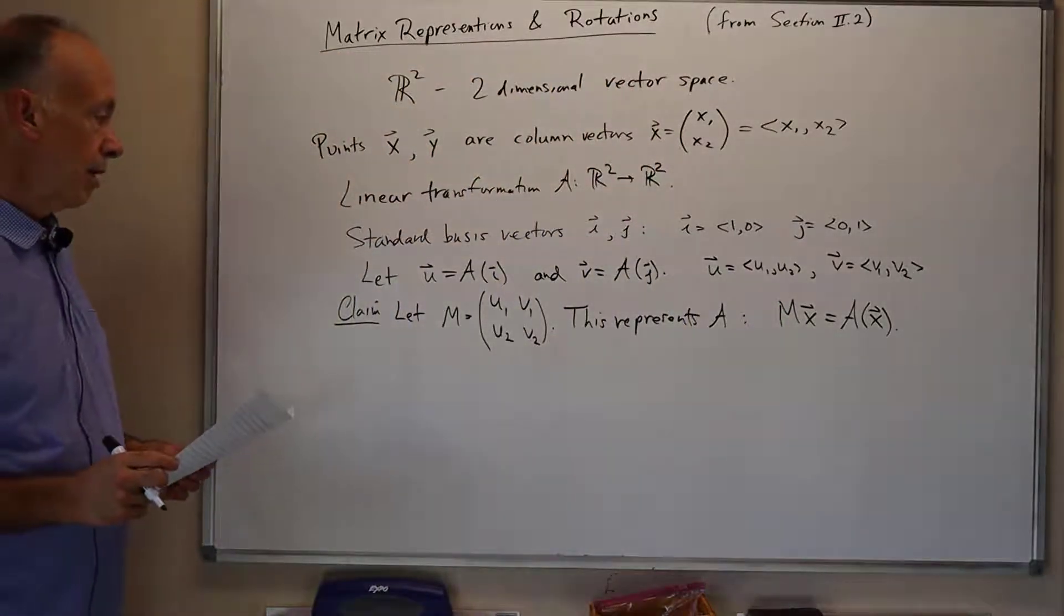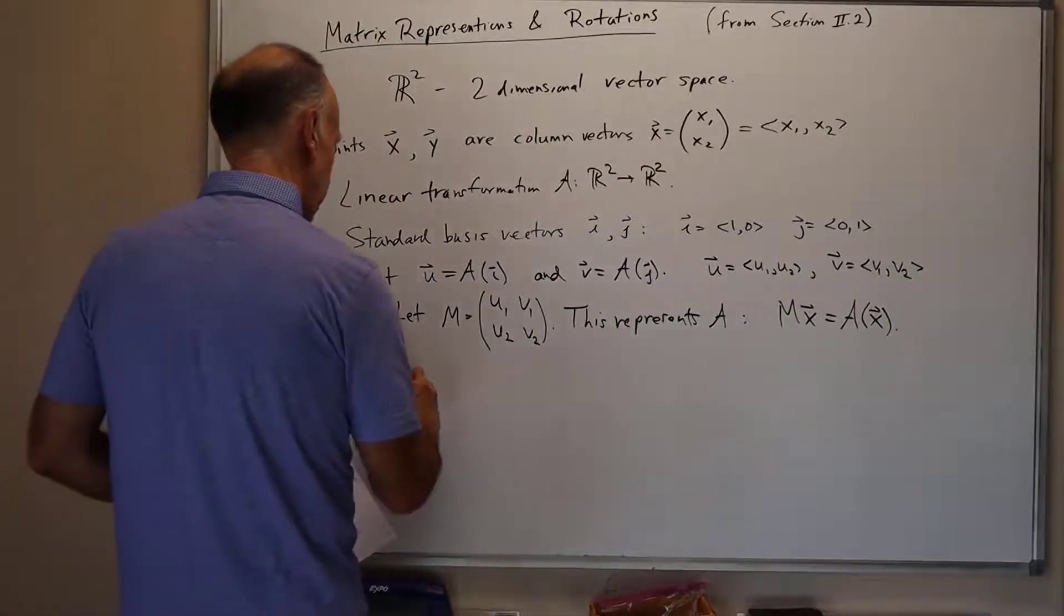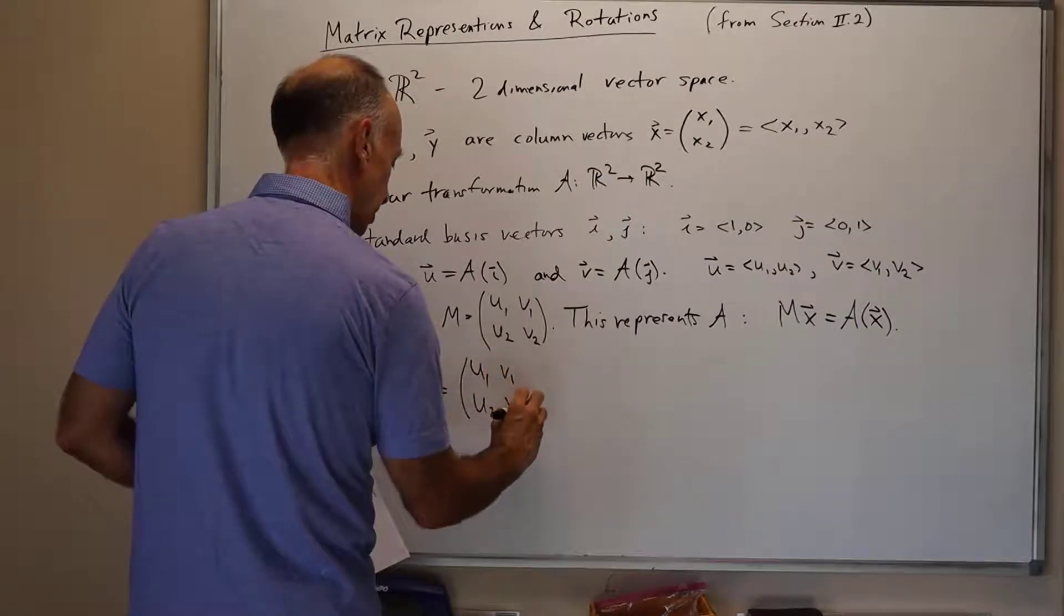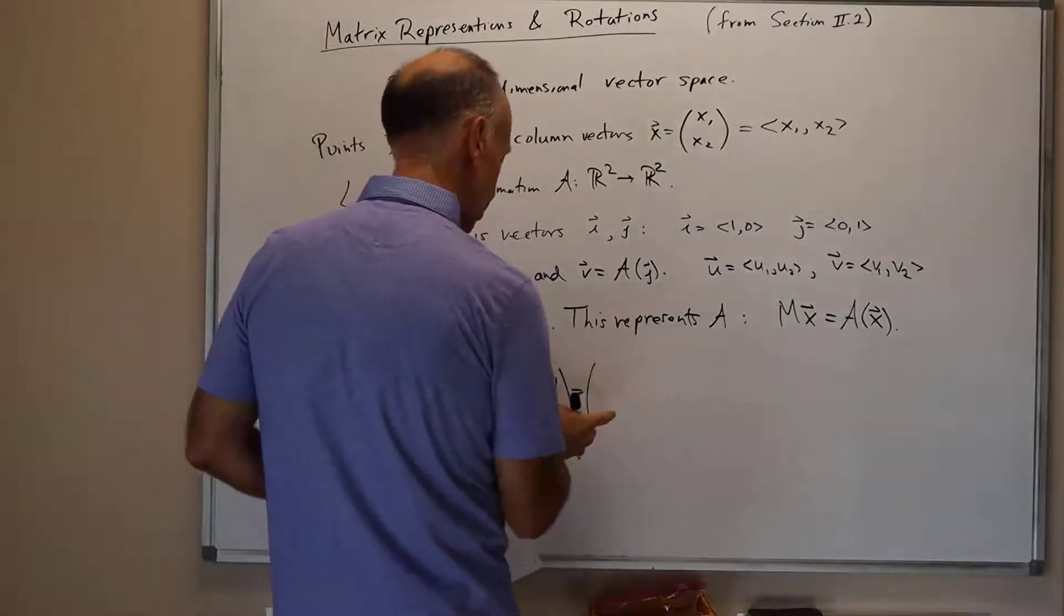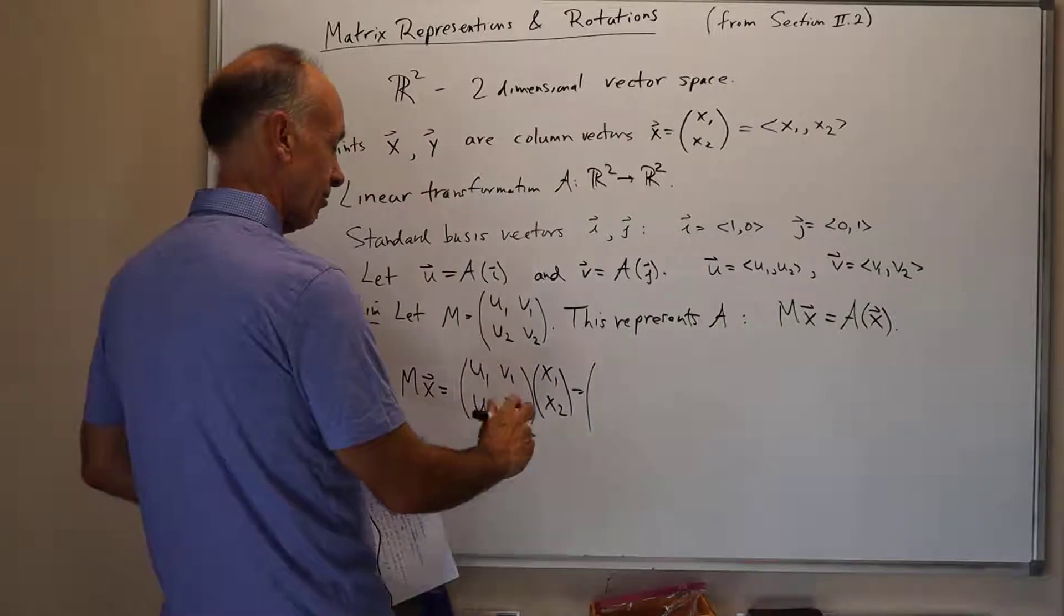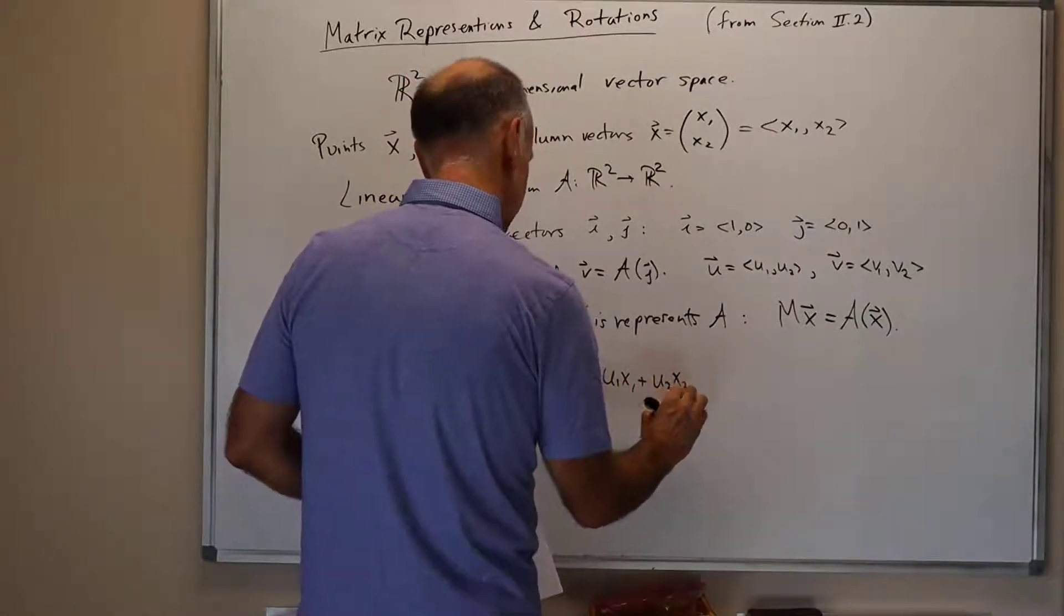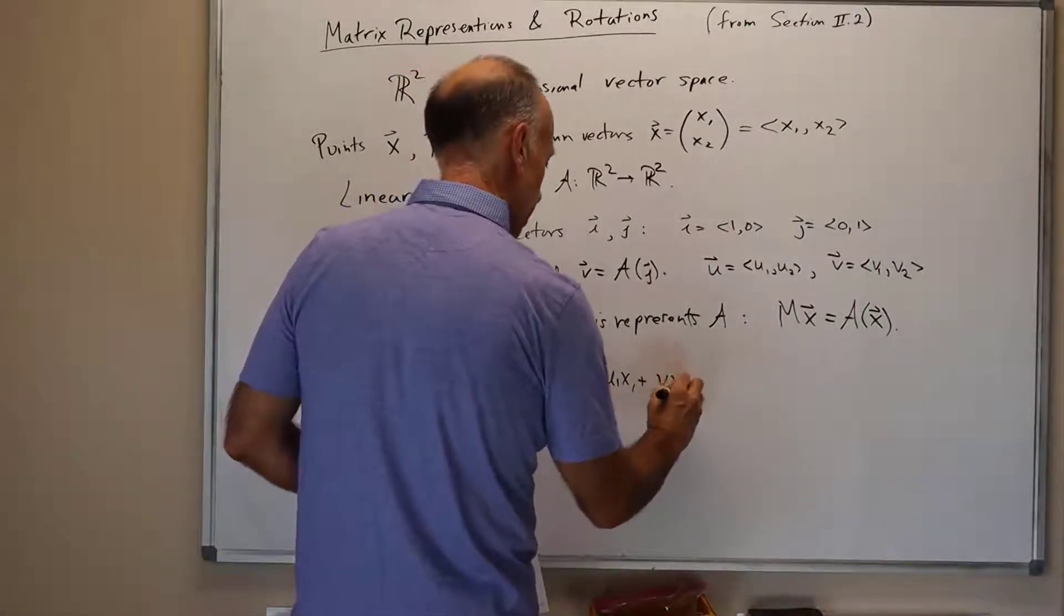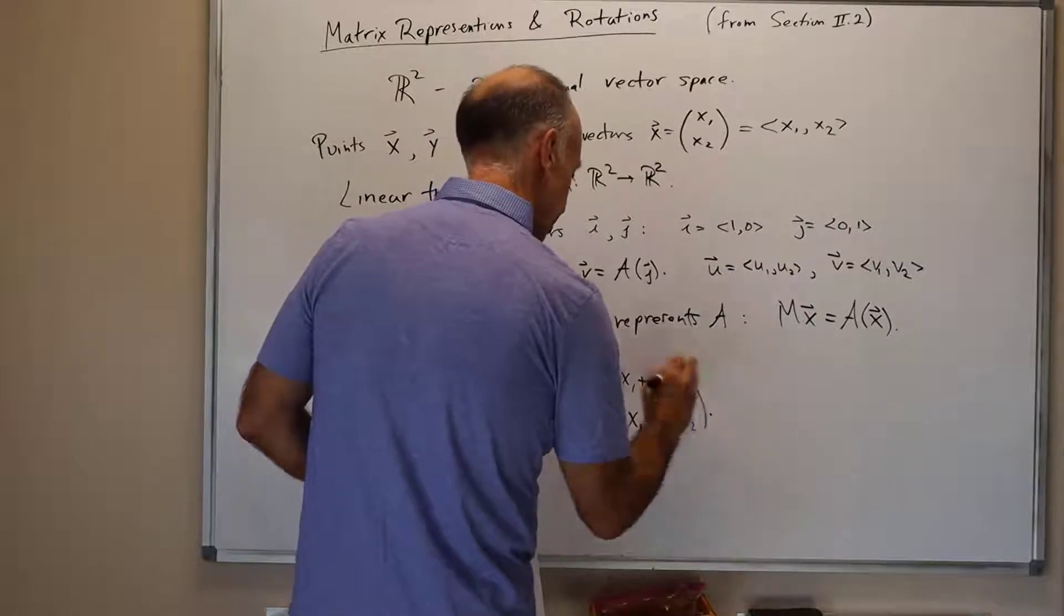The proof is pretty easy. It's just direct calculation. Mx equals, writing it out in terms of coefficients, u1, u2, v1, v2, times x1, x2. That's equal to, just doing normal matrix multiplication, we take the inner product of the column x1, x2 with the first row and then with the second row. We get u1 x1 plus v1 x2 as the first entry, and u2 x1 plus v2 x2 as the second entry.